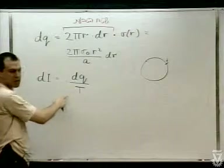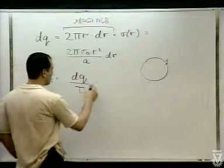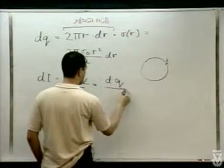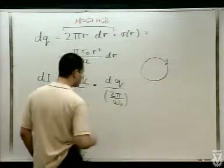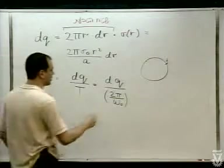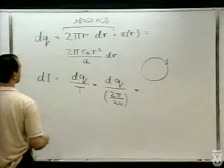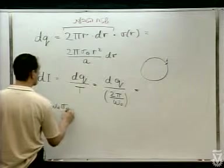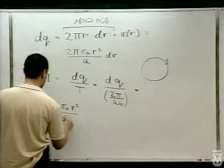זמן המחזור לא תלוי בR, הוא שווה לכל הטבעות. ומה הקשר שלו לאומגה, למהירות הזוויתית? נכון — שני פאי חלקי אומגה-אפס. ואם אנחנו נציב את הביטוי ל-DQ, אז השני פאי יצטמצם ויהיה לנו: אומגה-אפס, סיגמה-אפס, R², חלקי A, DR.